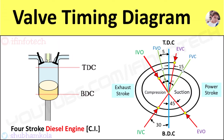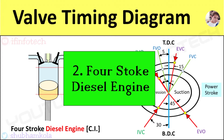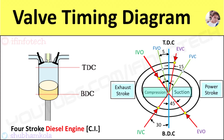Now we see the valve timing diagram for the 4-stroke diesel engine. Here I have drawn the sketch. In this cycle there are mainly 4 strokes: suction stroke, compression stroke, power stroke, and exhaust stroke. In the theoretical diagram, the suction valve opens at TDC, but in the actual valve timing diagram, the inlet valve opens 25 degrees before TDC position of the piston.